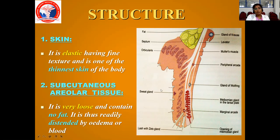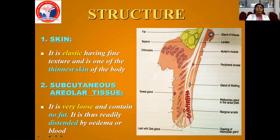First comes your skin. The skin in the orbit and the lid is very elastic, very fine in texture, and one of the thinnest skin of the human body. Then comes your subcutaneous areolar tissue, which is very loose and contains no fat. It is thus readily distended by edema or blood — that is why after injury, you have balloon-like swollen upper lids, but when it resolves the lid becomes normal again. The clinical importance is periocular edema, periorbital edema, and periorbital ecchymosis.